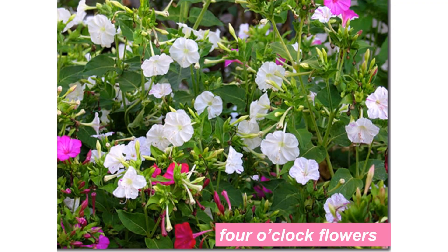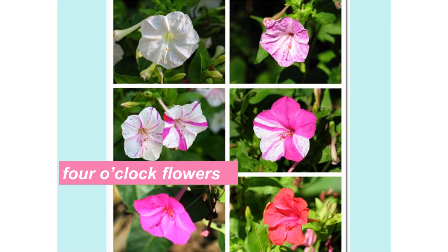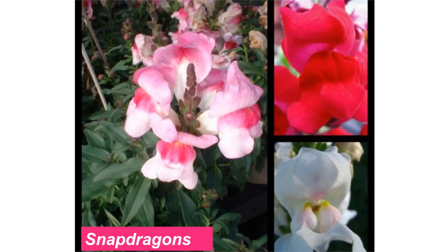A classic textbook example for incomplete dominance comes from a type of flower called the four o'clock. With these you have some that are white, some that are red, but you also have some that are pink. If we have dominant or recessive with just a single gene and two alleles, how do you end up with three different phenotypes? We see this also in snapdragons, where you'll have completely red flowers, completely white flowers, and some that are a mixture.